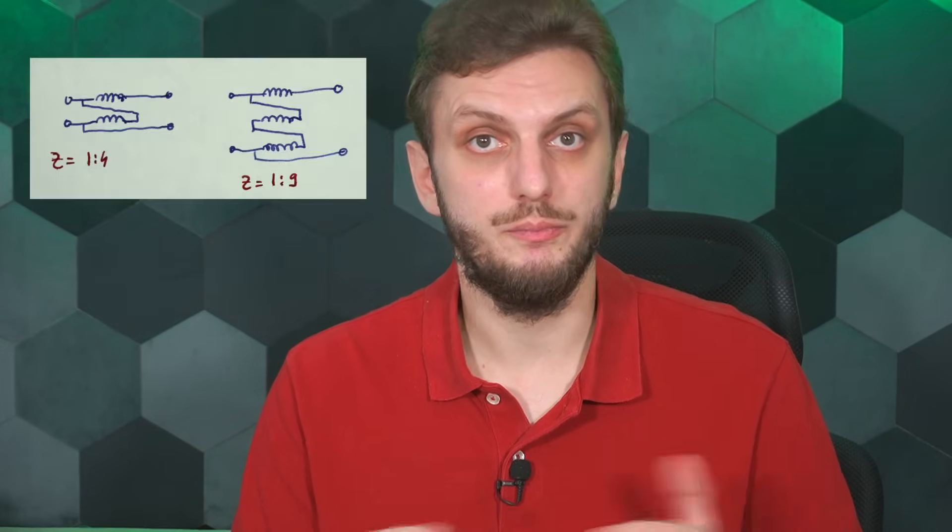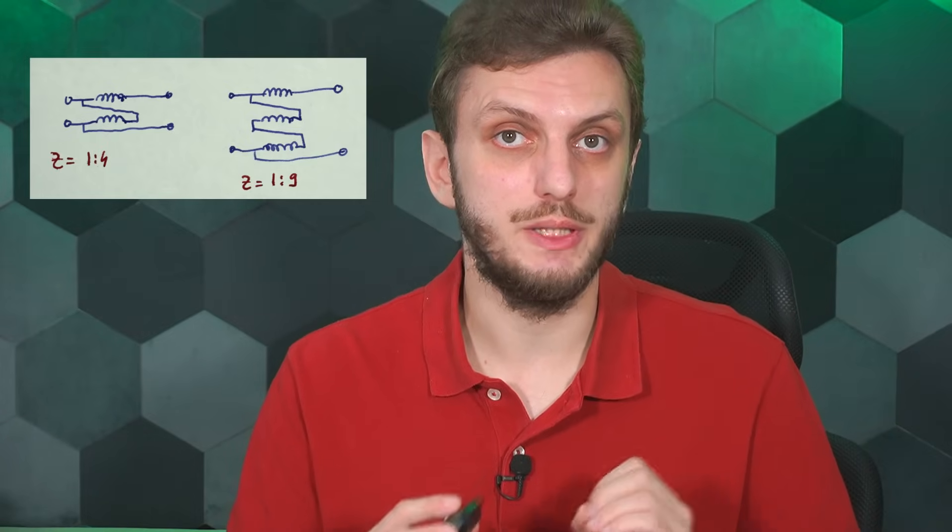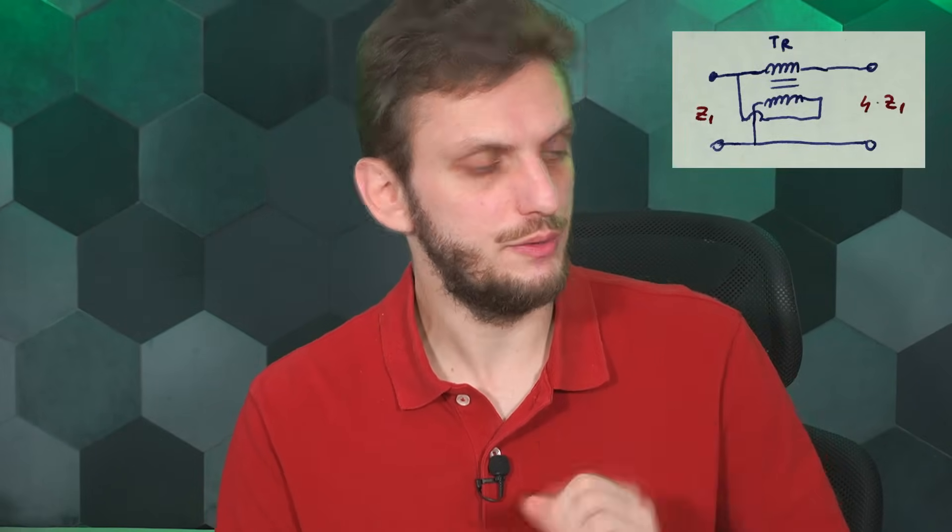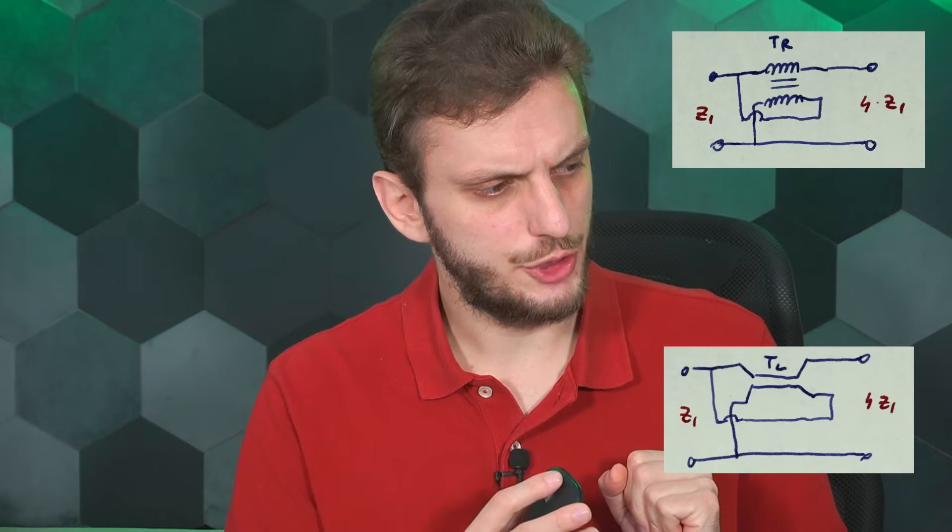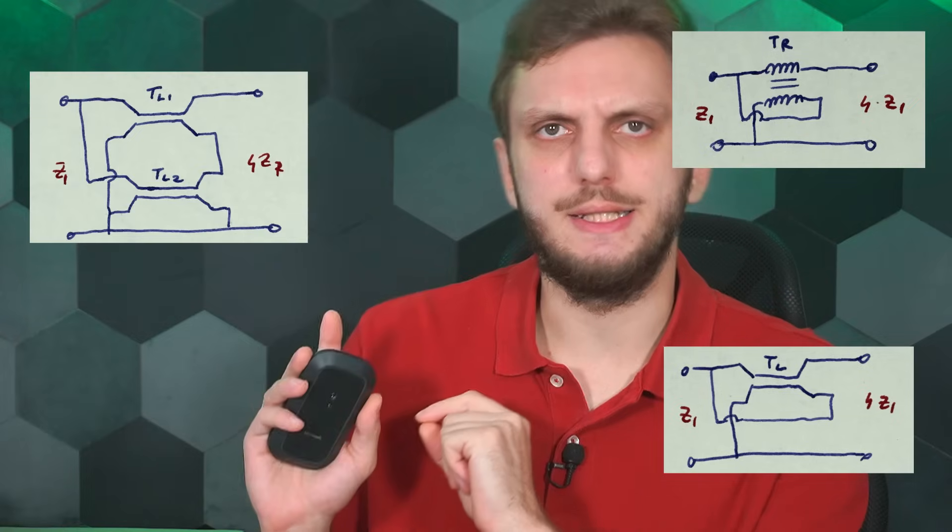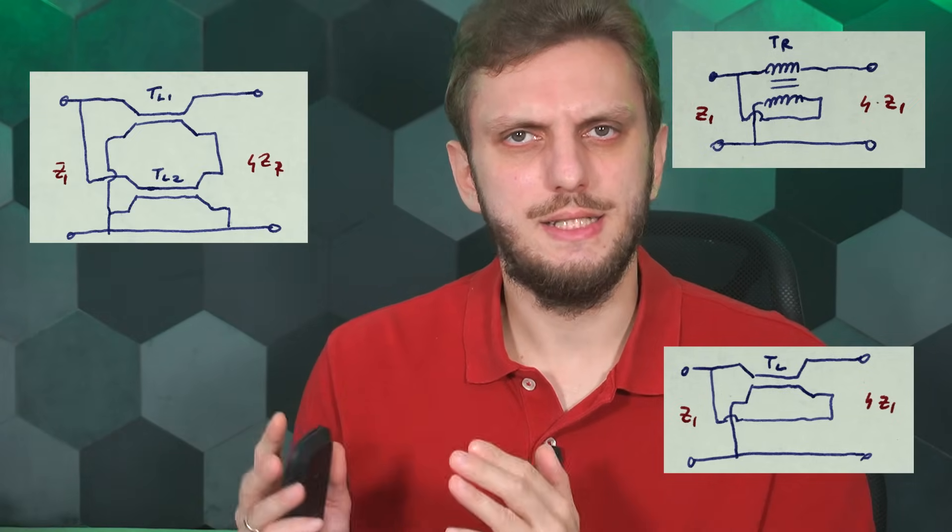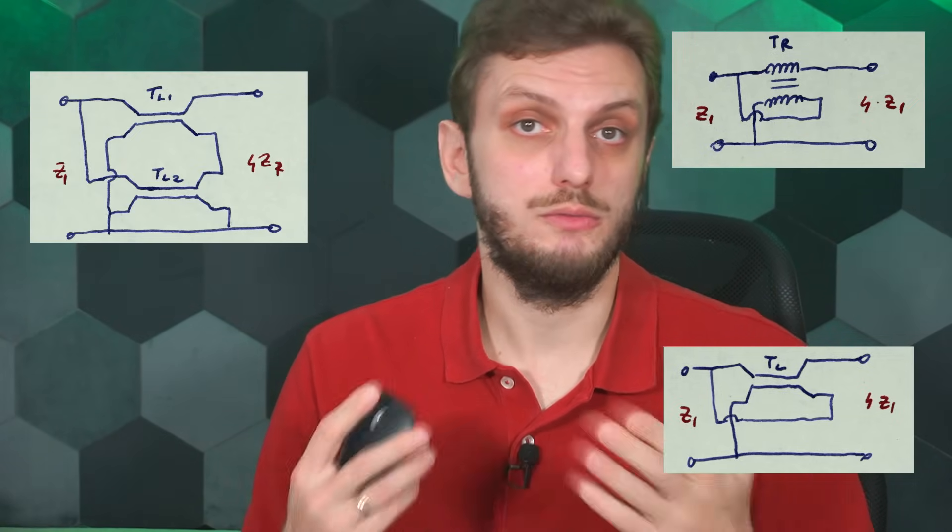To keep things simple, today I will stick to the 1 to 4 Ruthroff impedance transformer. But you can easily build any other impedance ratio. However, the same basic principles need to be applied. But speaking of the 1 to 4 transformer, I found three main ways of implementing it. You have the transformer version, the transmission line version, and then you have this thing. Is this even the same circuit? Well, to figure things out, let's start with an experiment.